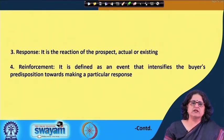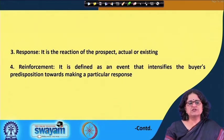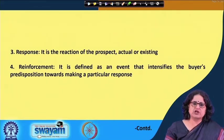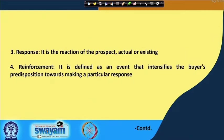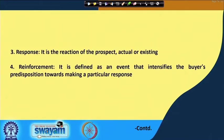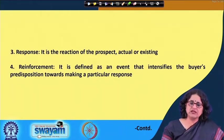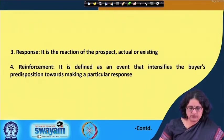The third element incorporated into the theory is response — the reaction of the prospect or an actual existing buyer. The fourth element is reinforcement, defined as an event that intensifies the buyer's predisposition towards making a particular response. According to the theory, the internal response tendency from the buyer is equivalent to the predisposition or inward response tendency, multiplied by the present drive level or motivation.